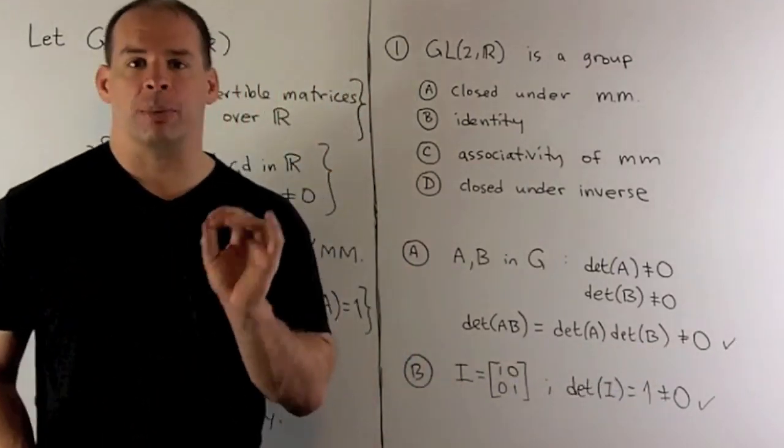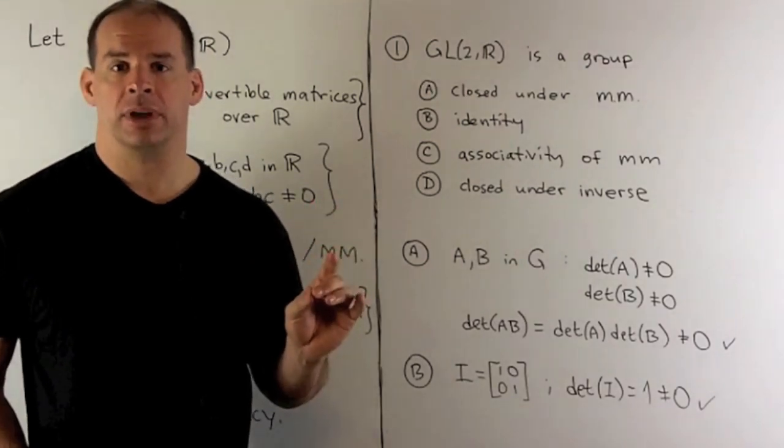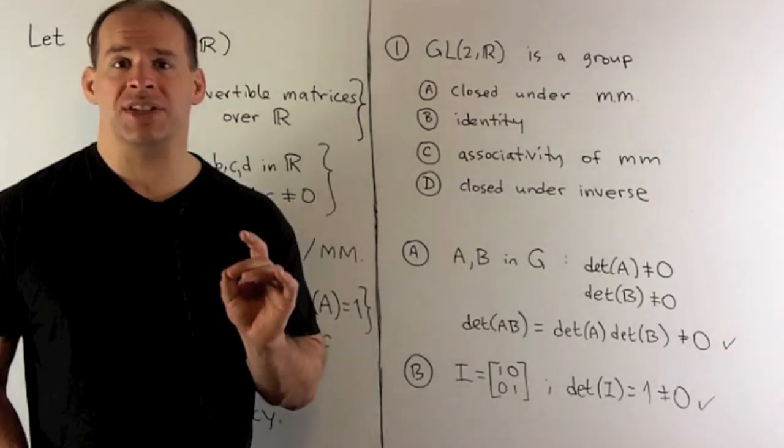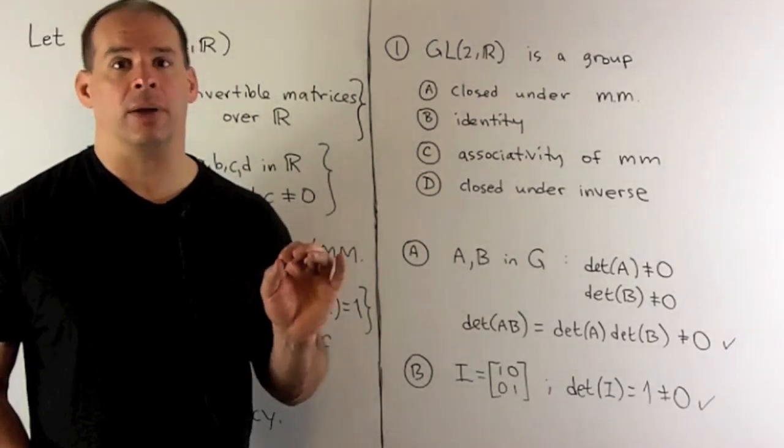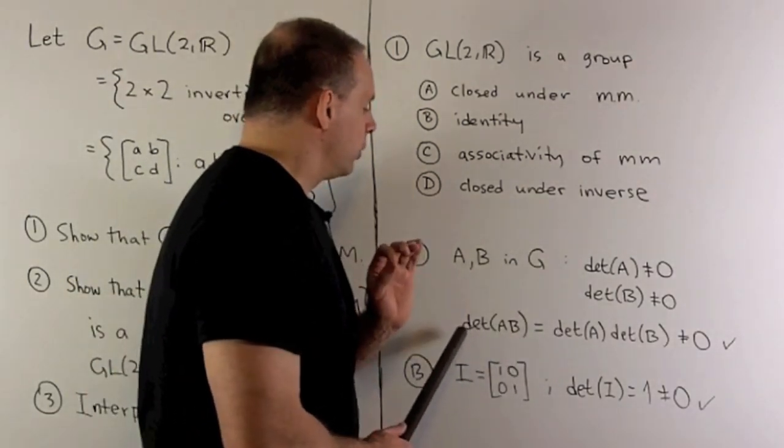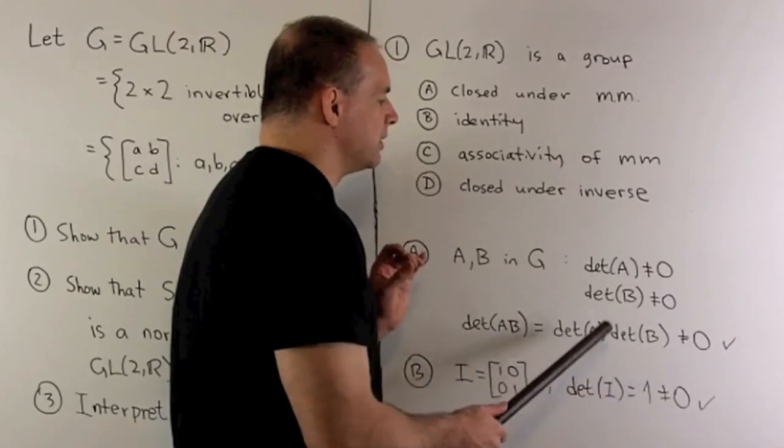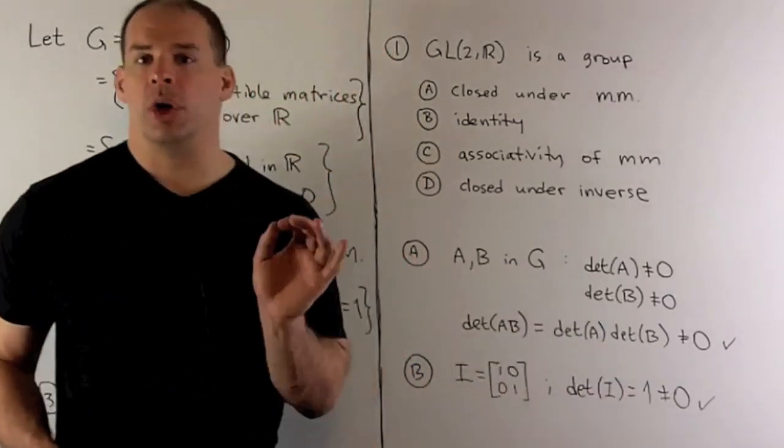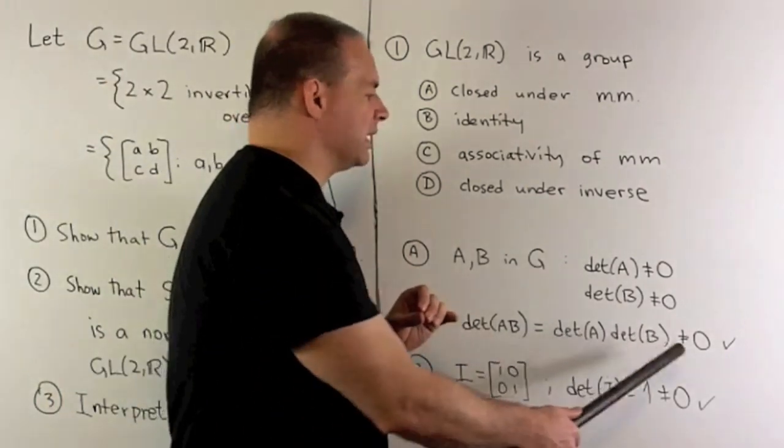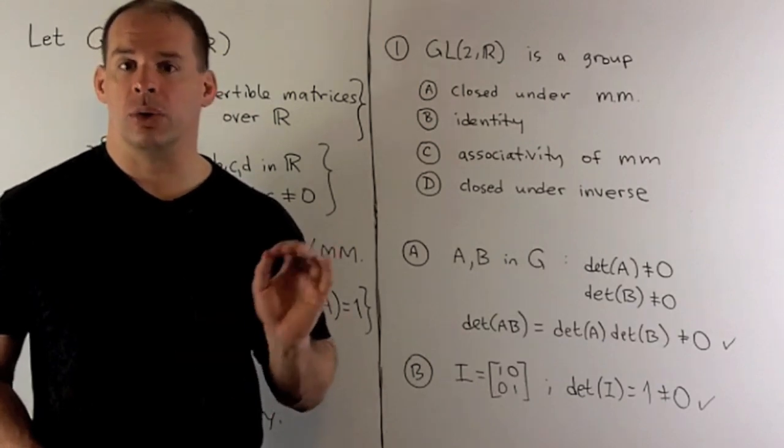If I take the determinant of a product of two matrices, it's the same as the product of the determinants. Now if you don't have that under your belt, since we're in the two by two case it's easy enough just to grind that out just to convince yourself. So if we take the product of the determinants, well since these are both non-zero, there's no way that I can get zero out. So we're going to have that the determinant of A times B is non-zero, so A times B is in G. So closed under multiplication.